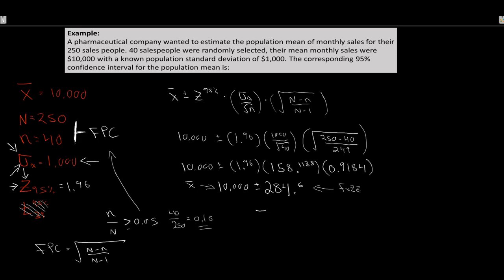So the confidence interval is: lower limit 10,000 minus 284.60 equals 9,715.40, and upper limit 10,000 plus 284.60 equals 10,284.60. The true population mean monthly sales are likely somewhere in this range. At a 95% confidence level, 19 out of 20 times this interval would cover the true population mean.